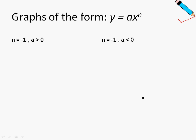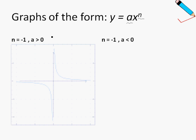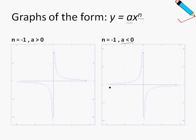Let me explain how this curve is supposed to look, depending on how the values of a and n change. In the first case, where n is negative 1 and a is greater than 0, the curve will look like this. In the second case, where n is negative 1 and a is now a negative number, the graph will reflect along the x-axis.